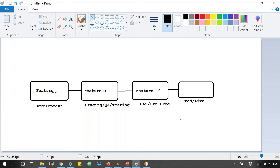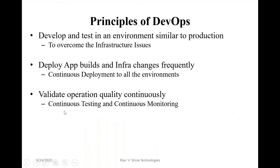From once the developer says code is ready — deploy, test, and monitor — these are continuous activities. This is continuous testing and continuous monitoring. The three principles are: having the same infra between development and production, continuous delivery of deployments, continuous testing, and continuous monitoring throughout the delivery lifecycle.